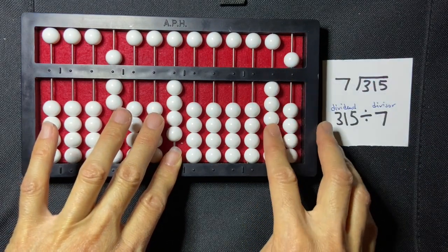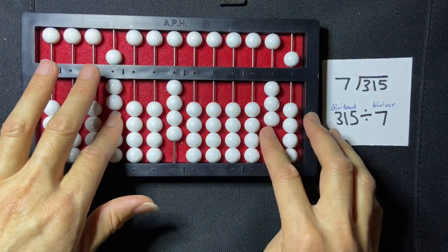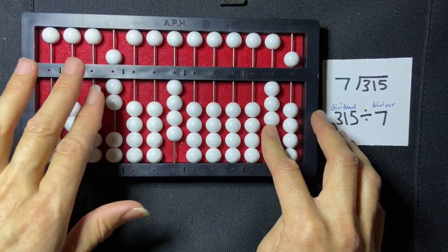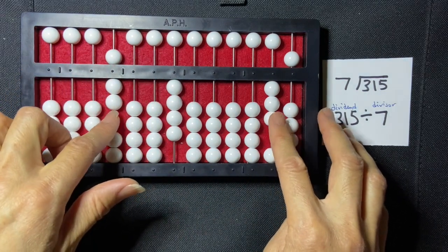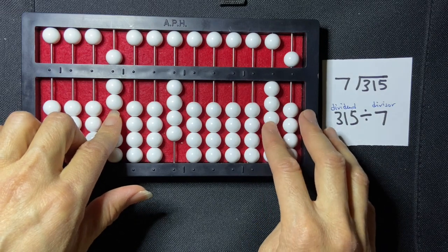Now I have 35 in my dividend, and so I'm going to compare 7 to 35. So I already know I can't compare it to 3. There are no groups of 7 that can go into 3, so I'm going to see how many groups of 7 can go into 35. And that's going to be 5.